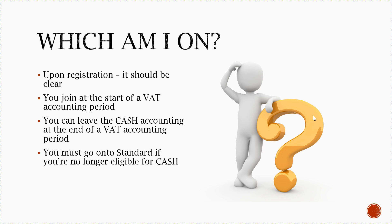But you don't have to. If you are going to switch from one to the other, always do so at the end of a VAT accounting period. And always remember that you must go on to the standard VAT accounting if you're no longer eligible for the cash accounting — so if in a 12-month period your sales turnover is more than £1.35 million, then you've got to go on to standard.